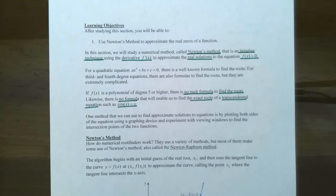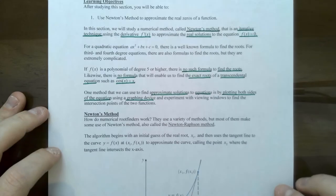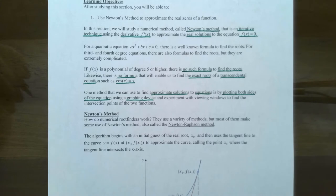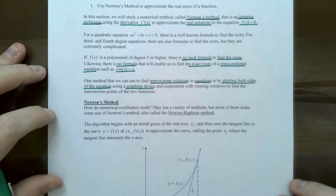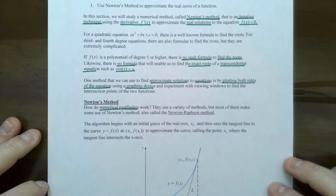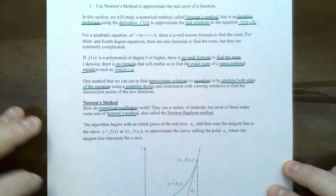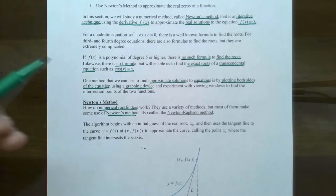One method that we can use is viewing windows. The process that the graphing calculator uses to find the intersection point is called Newton's method. Numerical root finders, such as the graphing calculator or any computer algebra system, use a variety of methods, but most of them use Newton's method, or sometimes it's referred to as the Newton-Raphson method.